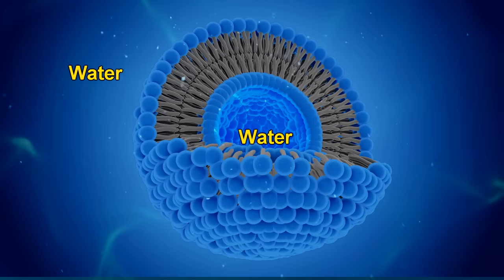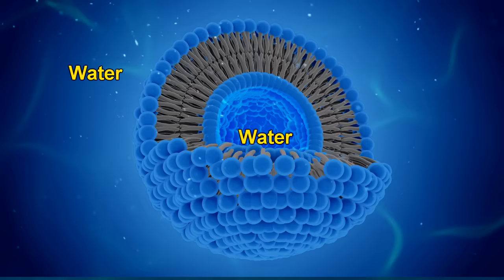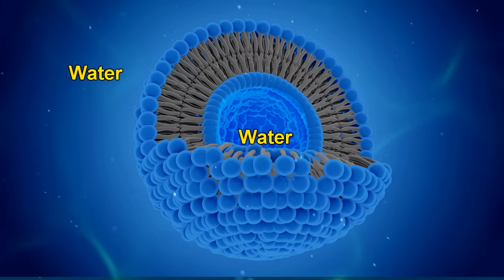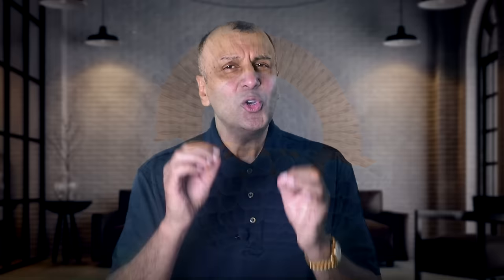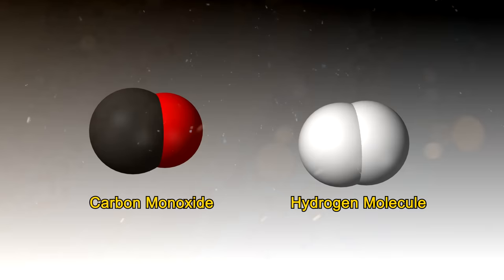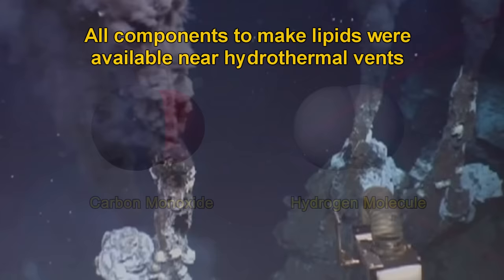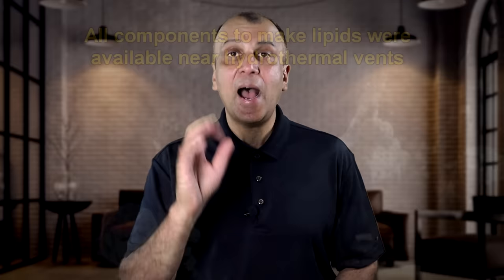Why does this happen? Because the tail parts of the molecule, since they want to get away from water, automatically face other tails that also dislike water. And the round part, which likes water, exposes itself to the water outside and inside the sphere — it is what these molecules do naturally. But where do lipids come from? It was once thought they could only be produced by living cells, but experiments have shown that when carbon monoxide and hydrogen is heated up with minerals commonly found in Earth's crust, lipids can form. All components were available in the early earth, and could have happened in underwater hydrothermal vents.